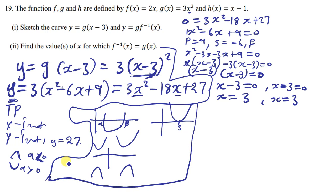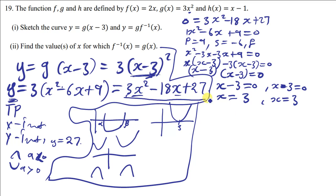So this quadratic equation does not cut the x-axis; it only touches the x-axis at x equals 3. It's going to turn at x equals 3, meaning automatically the value of y becomes 0 at the turning point. If you replace x with 3 in the expression, the value of y is 0, so the turning point is (3, 0).